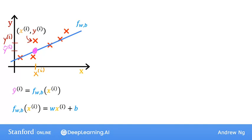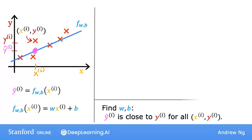So now the question is, how do you find values for w and b so that the prediction y hat i is close to the true target y_i for many or maybe all training examples x_i, y_i? To answer that question, let's first take a look at how to measure how well a line fits the training data. To do that, we're going to construct our cost function.